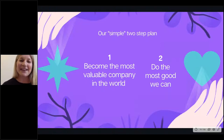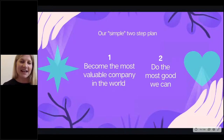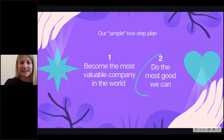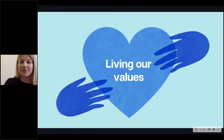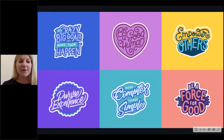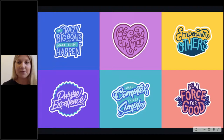At Canva, we like to try and keep things pretty simple, so we have a two-step business plan. The first step is to become the most valuable company in the world. The second step is to do the most good we can. Number two is really why I'm here today and why we offer our premium product for free to all of our nonprofits — it's a big part of living out our values. We have six core values at Canva: set crazy big goals and make them happen, be a good human, empower others, pursue excellence, make complex things simple, and be a boss for good.